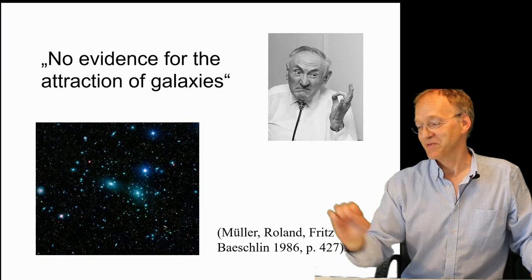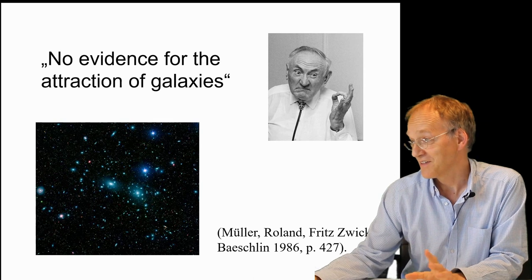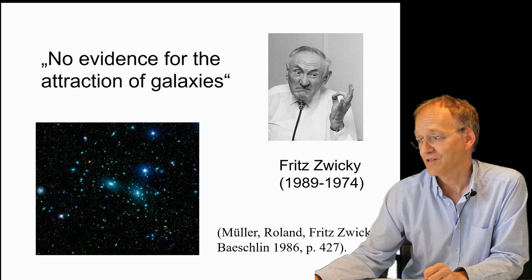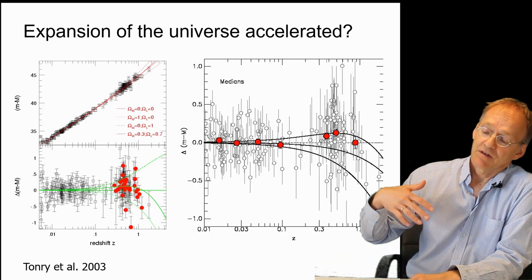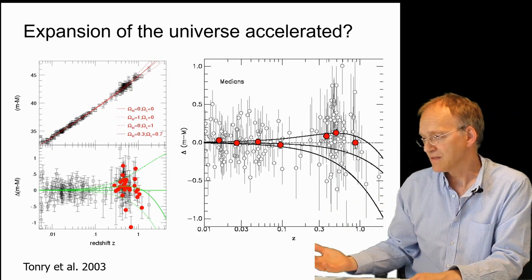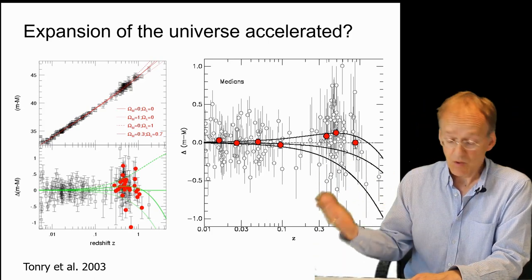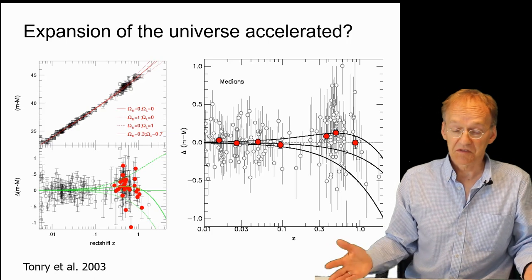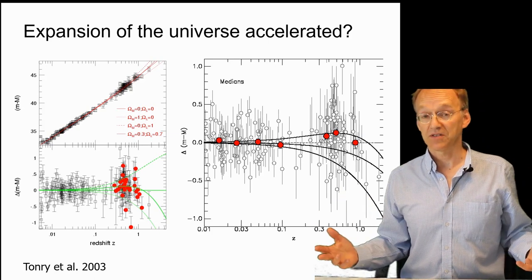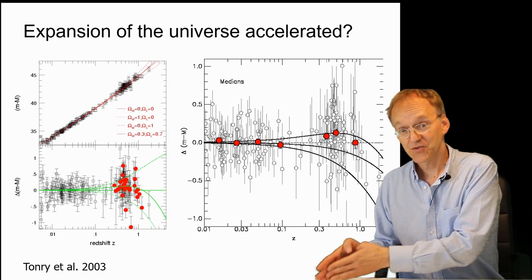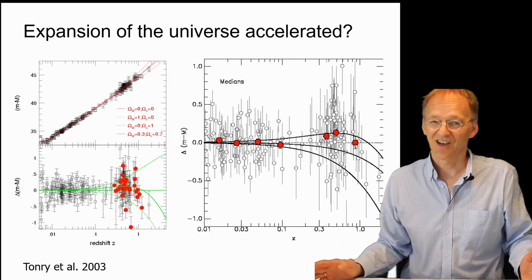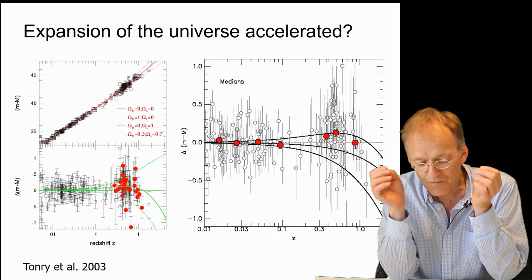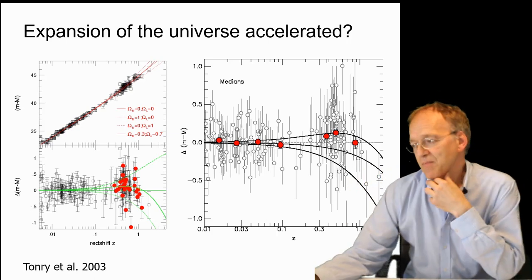And then people were putting this data into diagrams and realized the slowdown of the expansion is not there. It should be there because everybody was convinced that there should be gravitational attraction slowing down the Hubble expansion. No, it wasn't. Interestingly, the famous astronomer Fritz Zwicky said this a long time ago, that there was no evidence for the attraction of galaxies. But then people were putting all this data into their models and said we don't observe the deceleration that we postulated.